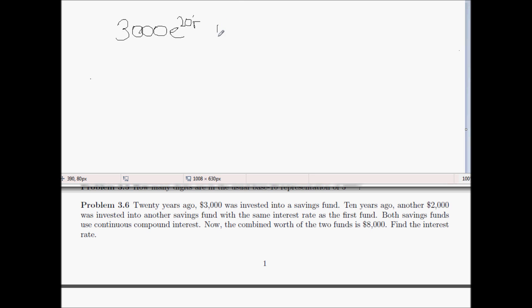Also, there's an additional investment of another $2,000, and that part has had 10 years to accumulate interest. So that's equal to 2,000 times e to the 10r. Combined, that is equal to $8,000, and so the object is to solve for r.